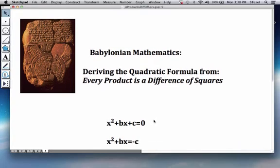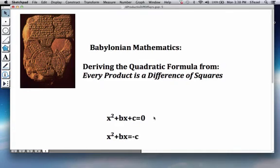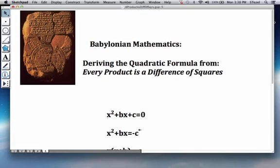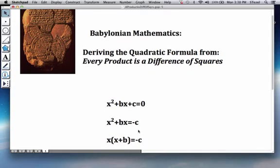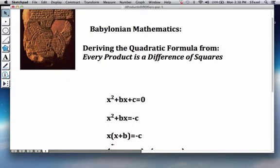So the first thing we do is we throw the c value on the other side so it becomes negative c and observe that you can now factor the x from the left side. We have x times x plus b and suddenly you realize you're dealing with the product here on the left side. And we learned earlier that every product is a difference of squares.